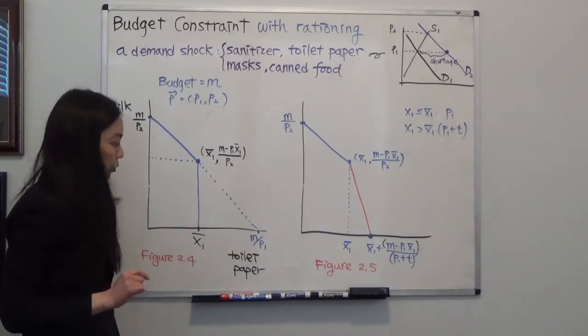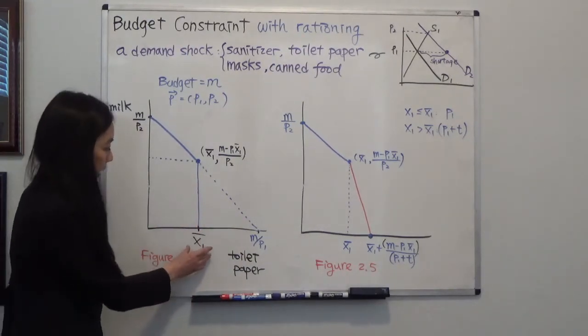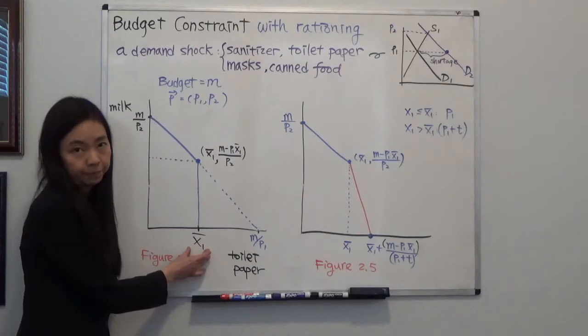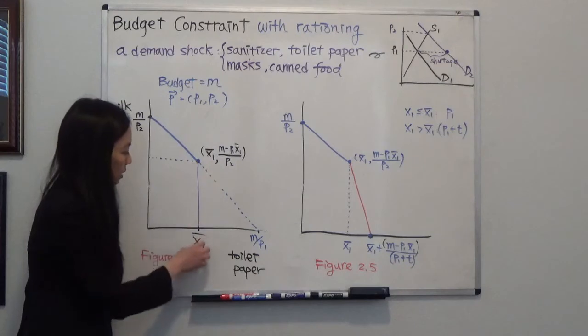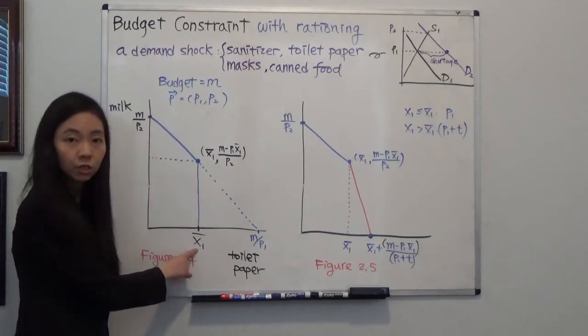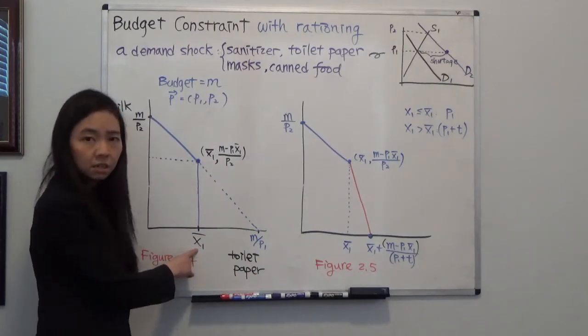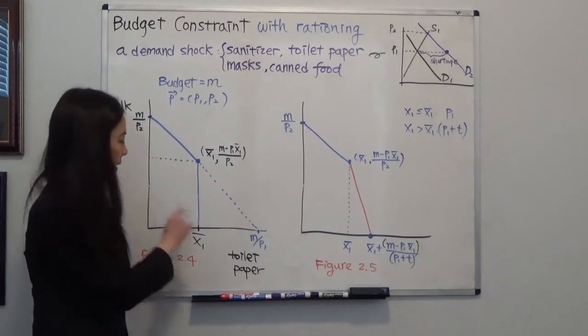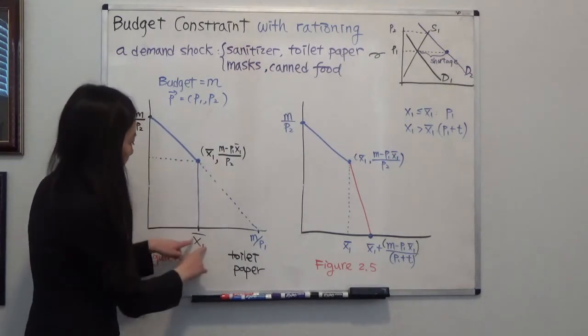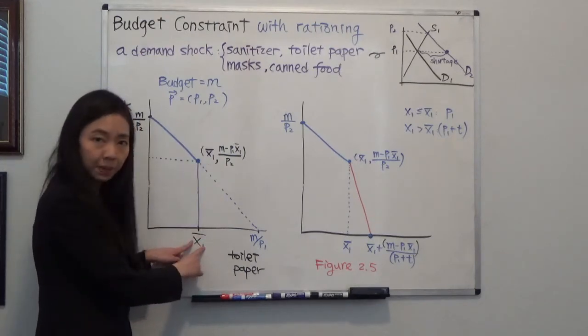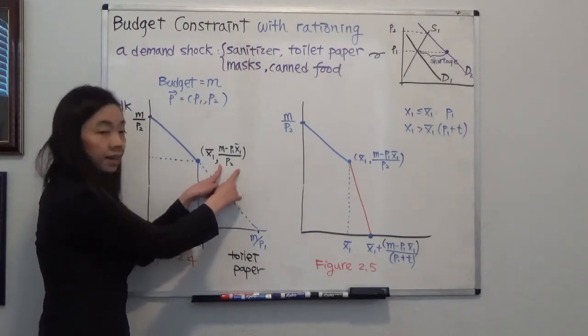But now the shop tells you, you cannot buy more than x bar rows of toilet paper. So that's the maximum I can purchase. Now suppose I want to buy x bar rows of toilet paper, then how many gallons of milk can I buy? So you can find the kink here. The kink would be x bar units of toilet paper. But how many gallons of milk?